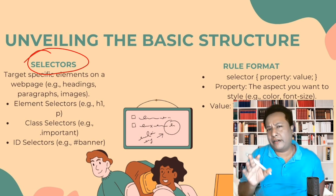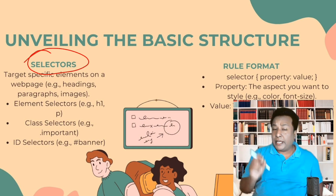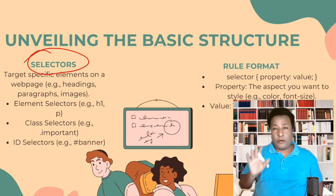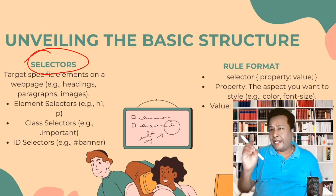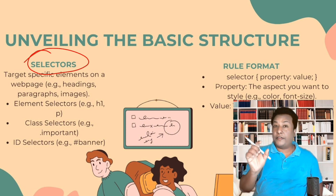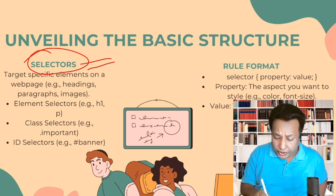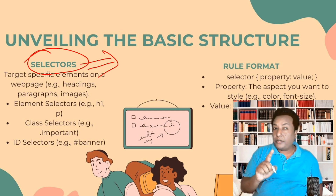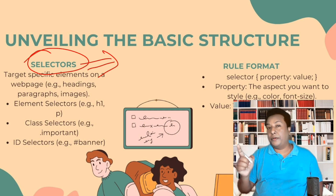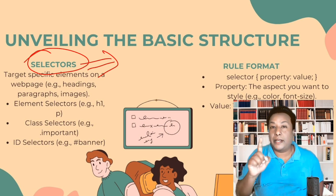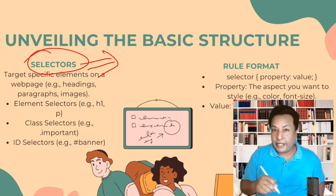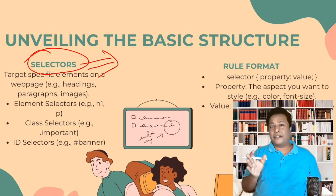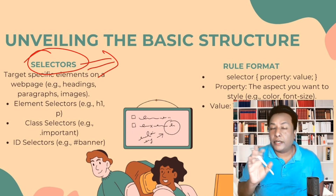To design elements, we first need to select them. Let's say we have an HTML page with one h1 heading and I want to change the color of that heading — first I need to select that element using a selector. As a second example: we have a div with a class called 'hello'. To select that div we use a class selector. And there's also the id selector.